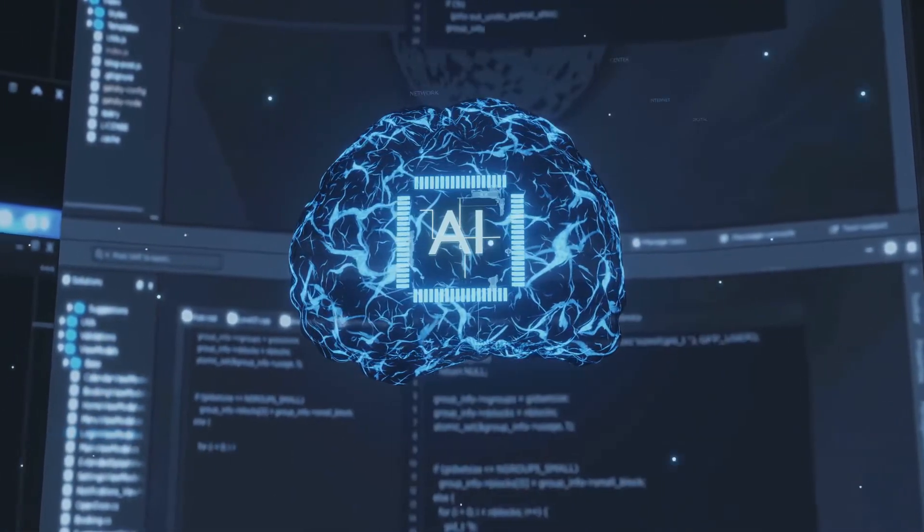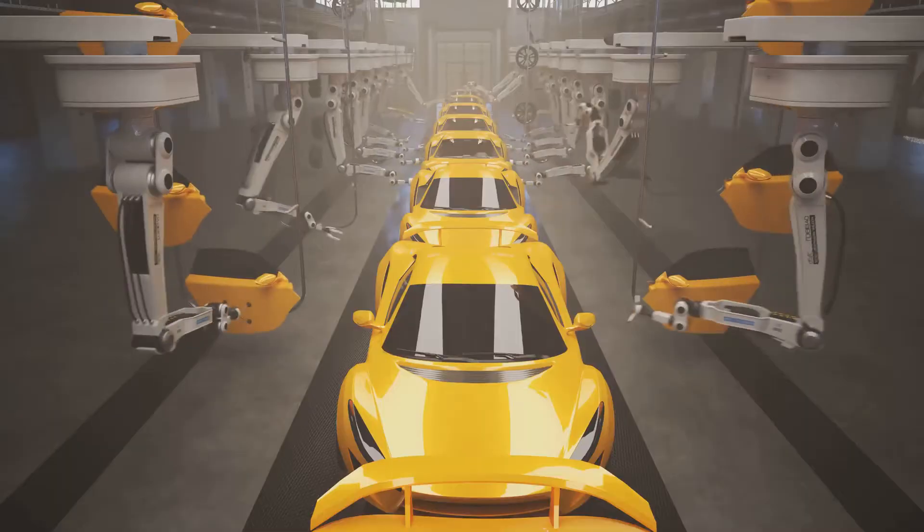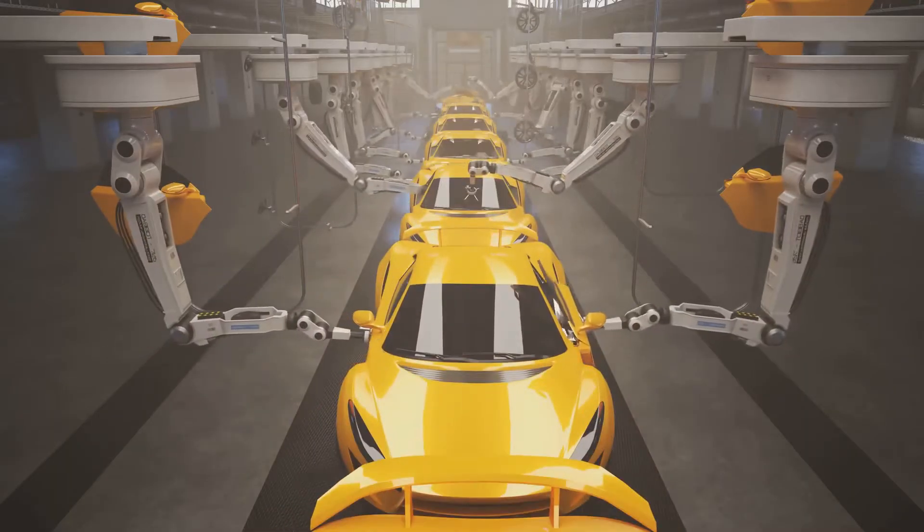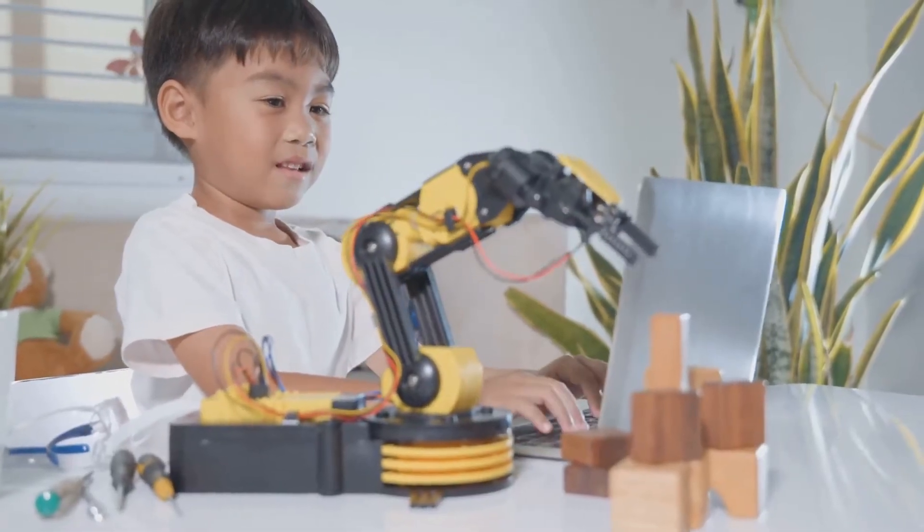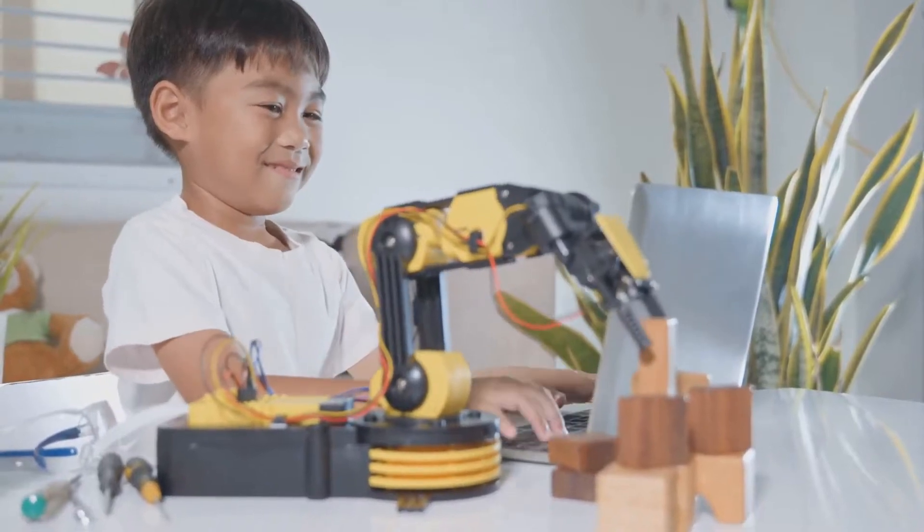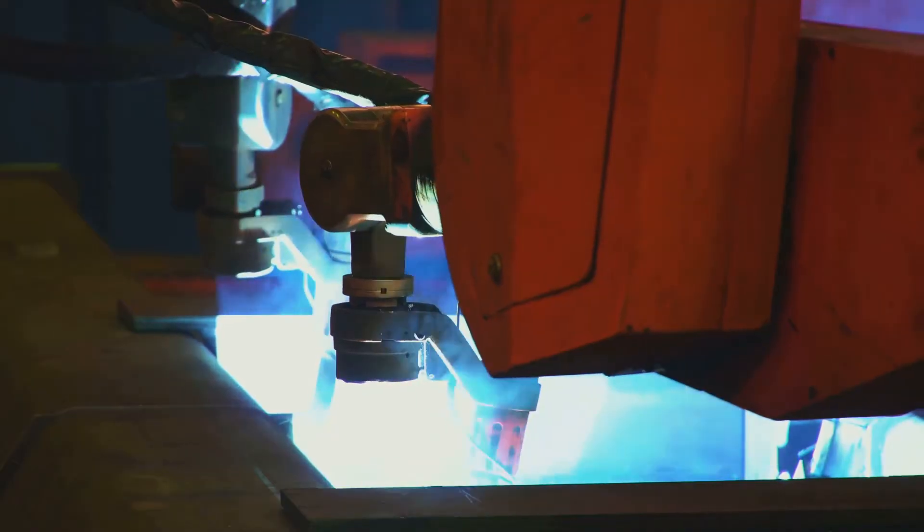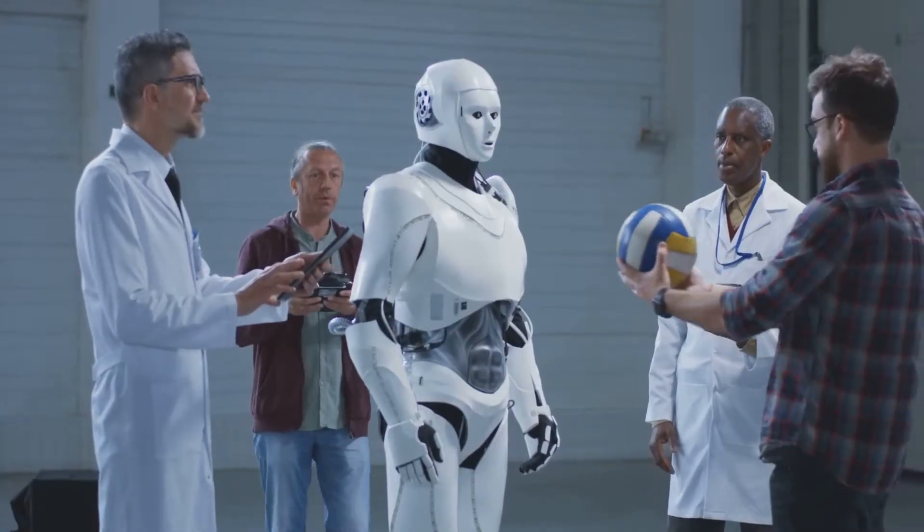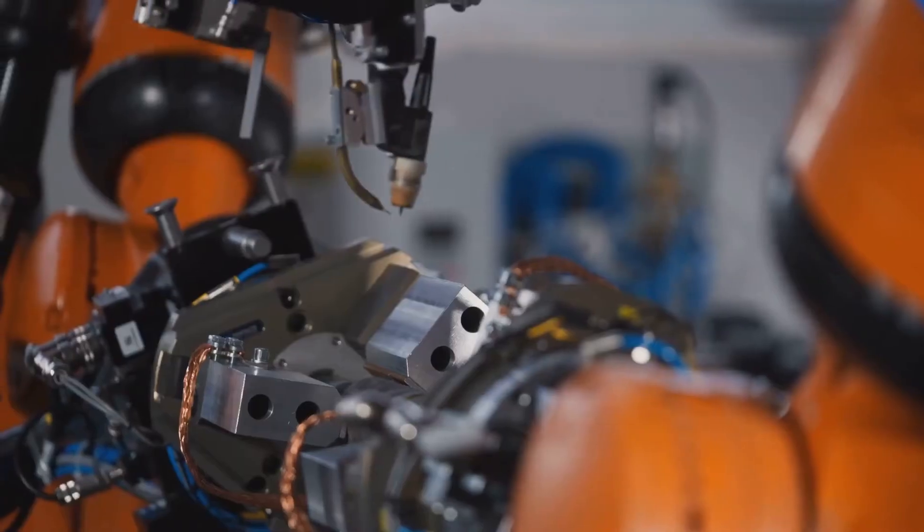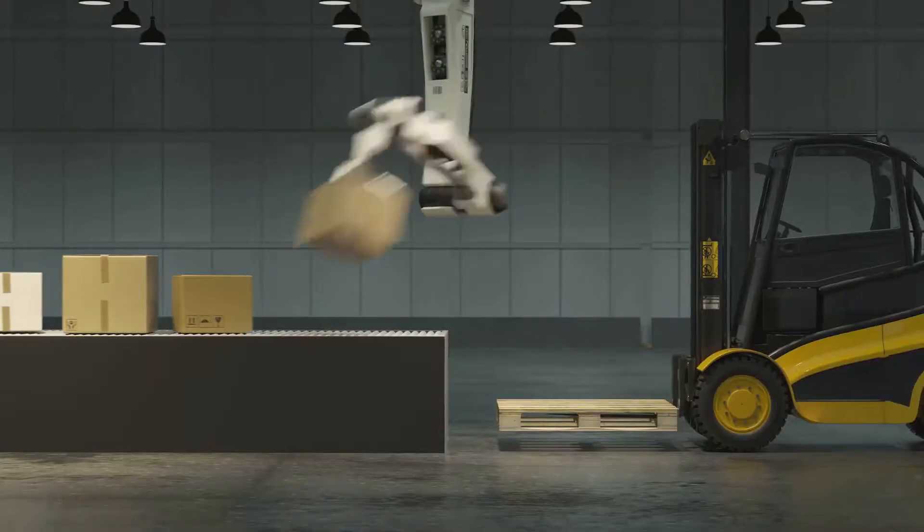Let's take a real-life example. Consider a robotic arm in a car assembly line. Reinforcement learning can be used to train this arm to perfectly fit a component, say, a car door. Each time the arm fits the door correctly, it gets a reward. If it makes a mistake, it receives a penalty. Over time, the arm learns to fit the door accurately to maximize its reward.